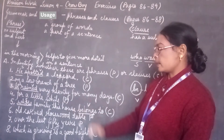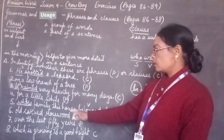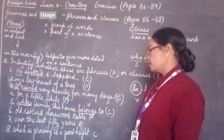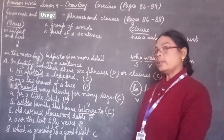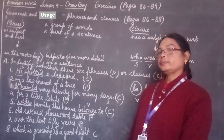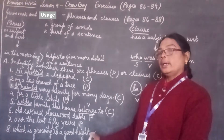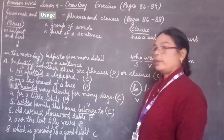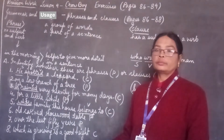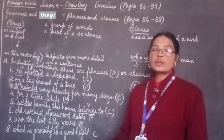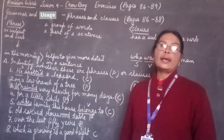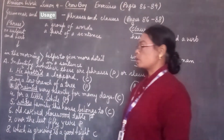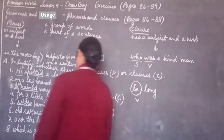Step into number 6: 'over carved rosewood table'. In this group we have no subject and we have no verb, so it belongs to our phrase.